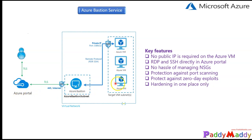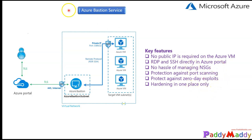Azure Bastion does not require you to configure external ports like RDP or SSH within your NSGs. It protects against port scans because virtual machines only have private IP addresses within your VNet. It also protects against zero-day exploits and centralizes hardening in one place, making it easy to keep up to date and make changes.